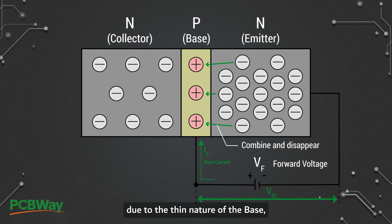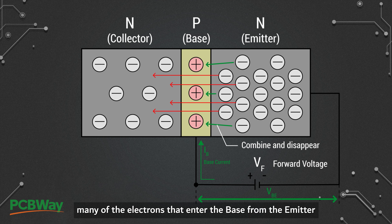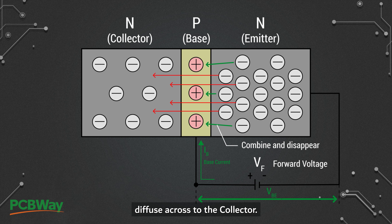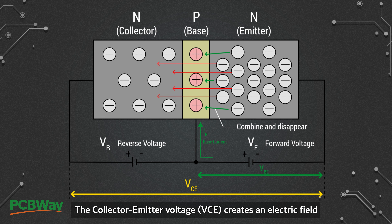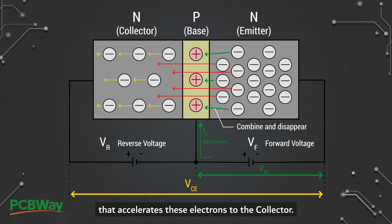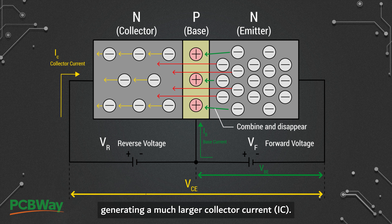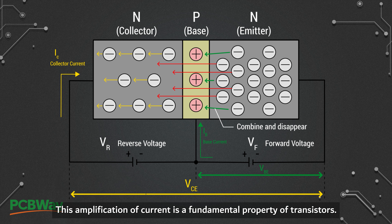However, due to the thin nature of the base, many of the electrons that enter the base from the emitter diffuse across to the collector. The collector-emitter voltage creates an electric field that accelerates these electrons to the collector, generating a much larger collector current. This amplification of current is a fundamental property of transistors.